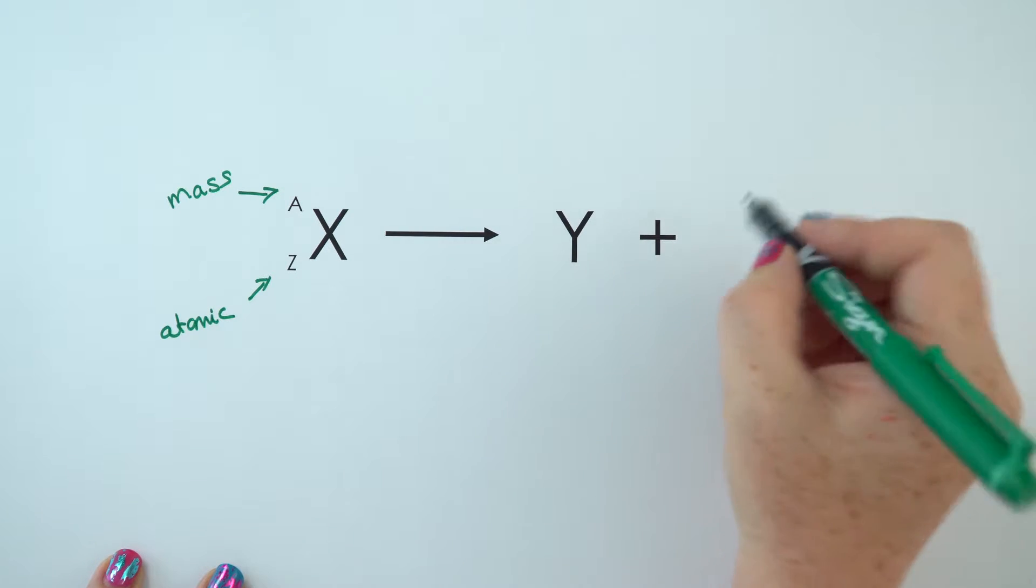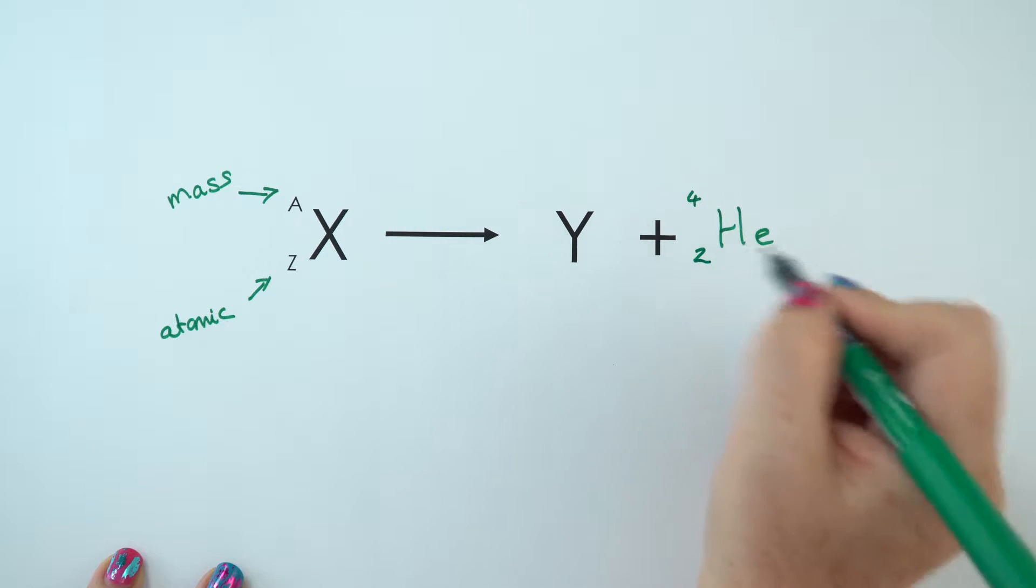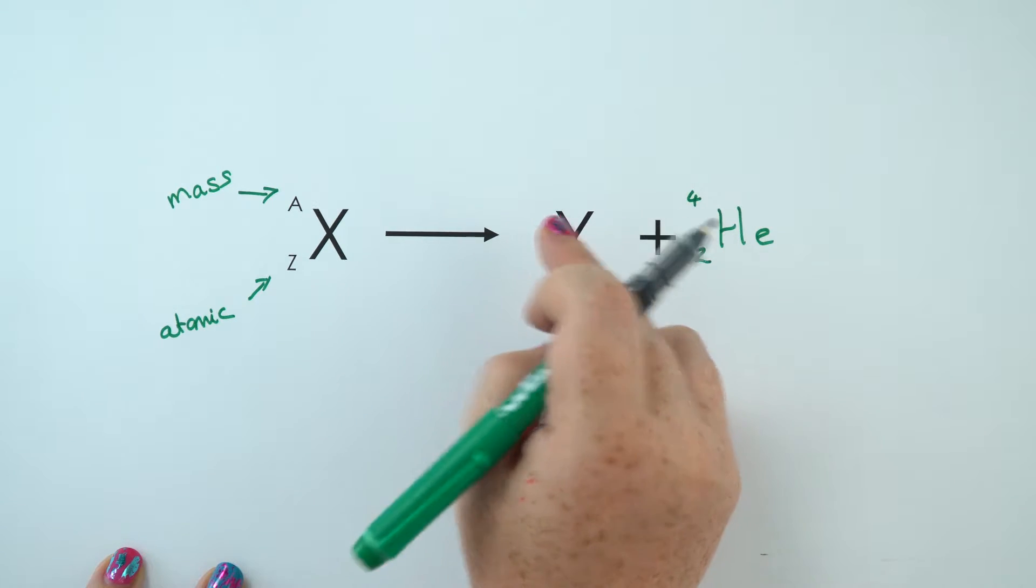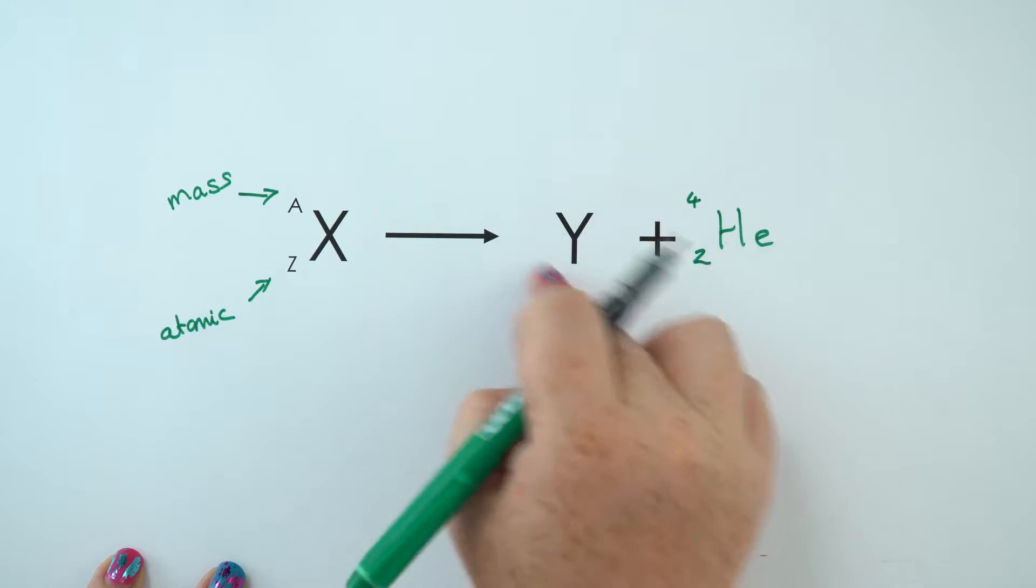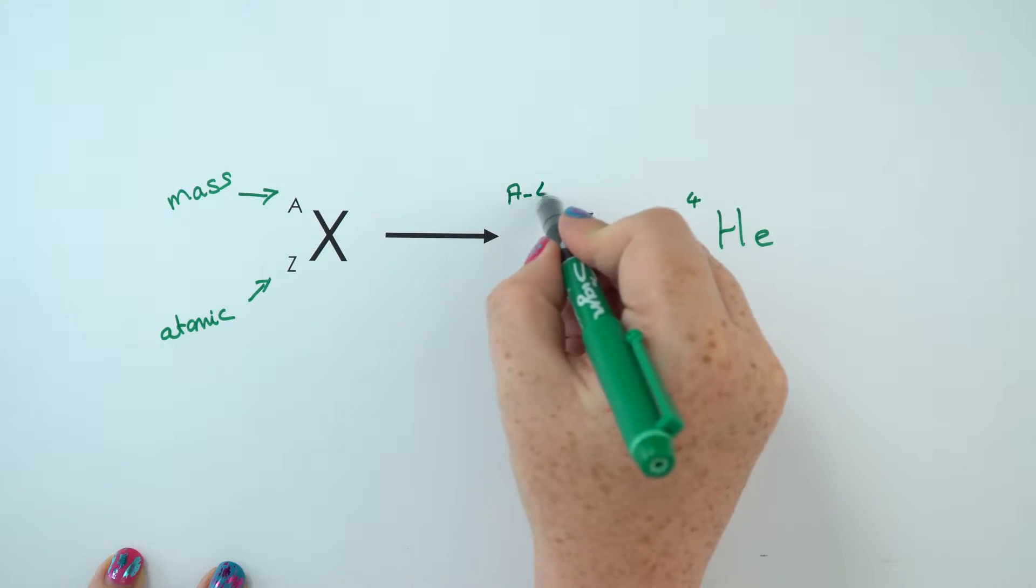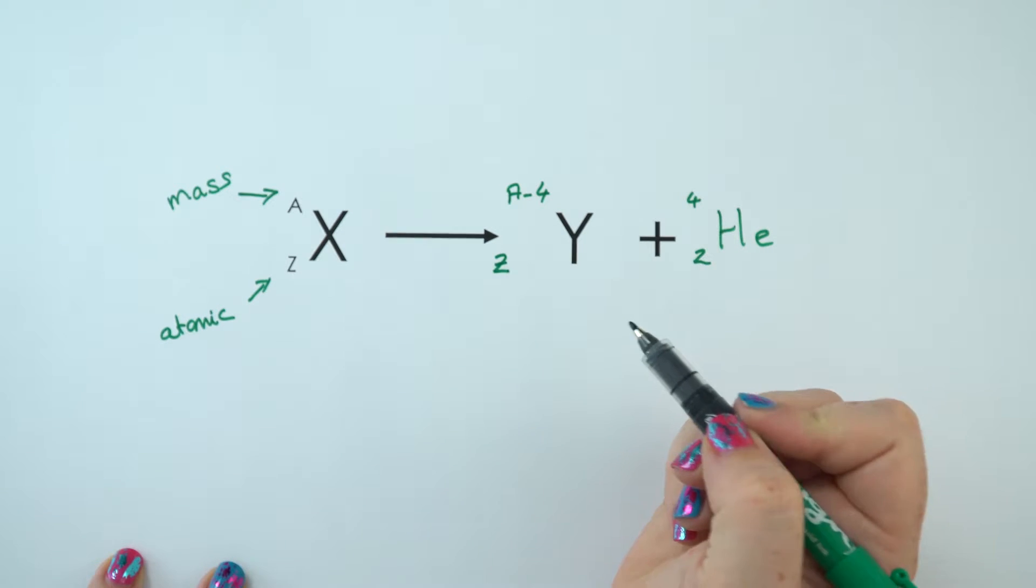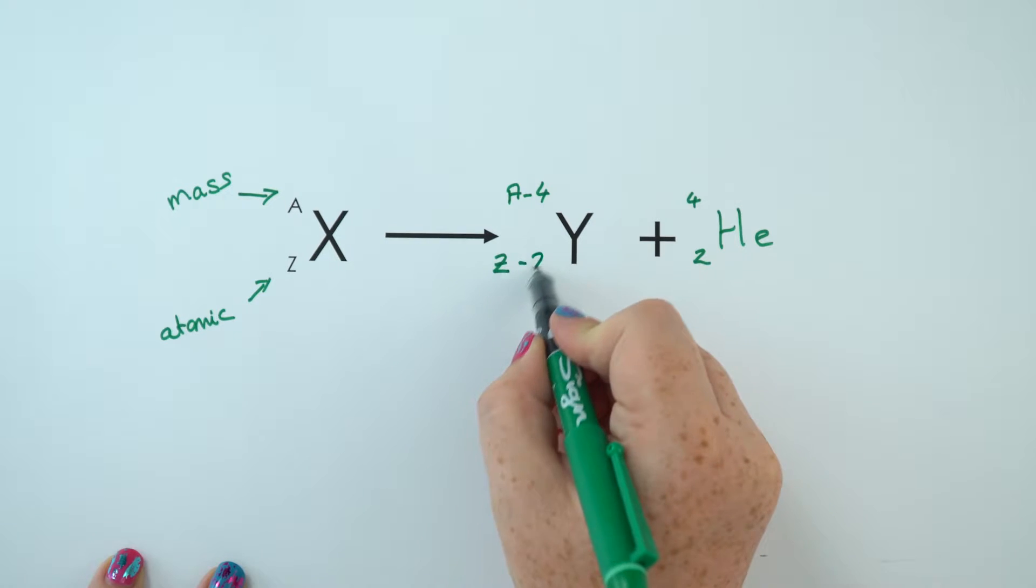When we lose an alpha particle, an alpha particle has a mass of 4 and an atomic number of 2. So if we want to find the mass of the new particle created, we'll take the mass of the old particle minus 4, and the atomic number will be the atomic number of the old particle minus 2.